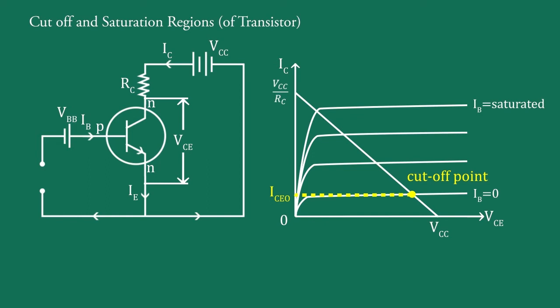At the cut-off point, the base-emitter junction no longer remains forward biased. Thus, collector-emitter voltage is nearly equal to VCC and is denoted as VCE cut-off, that is VCE cut-off equals VCC.